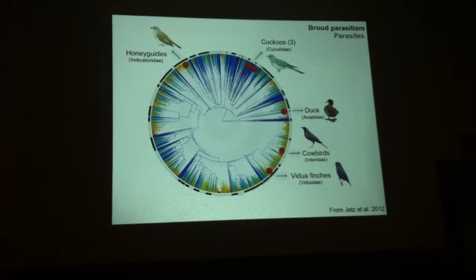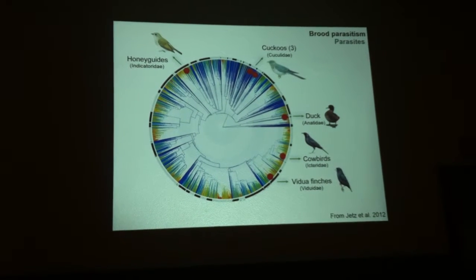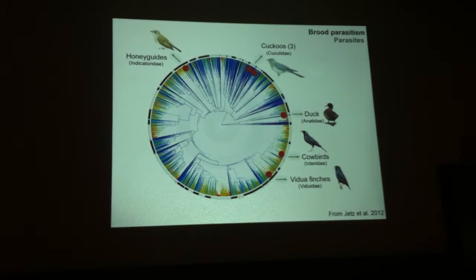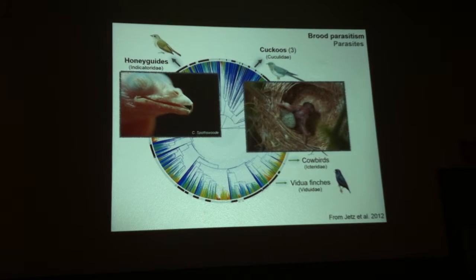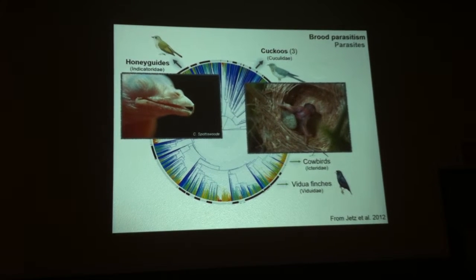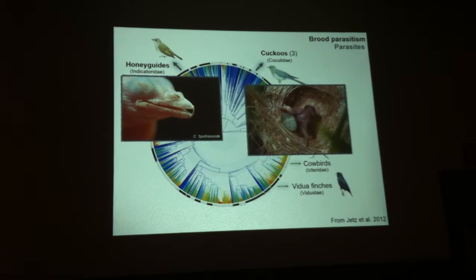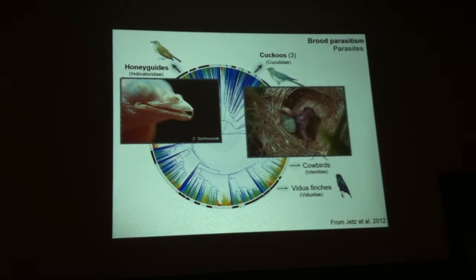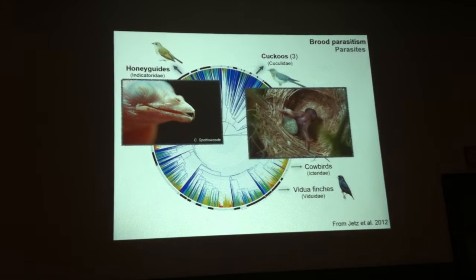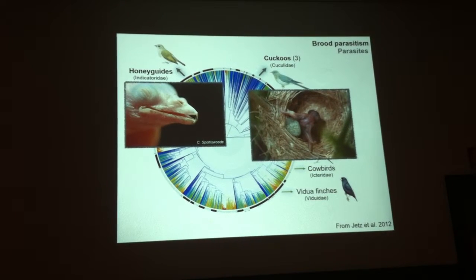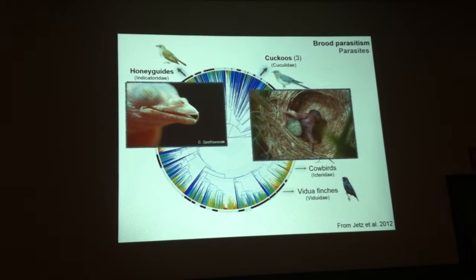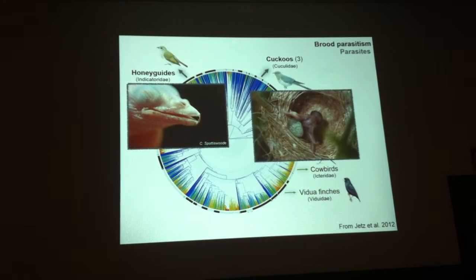Although all these lineages are considered to be bird parasites, there are differences in how virulent they can be. Honeyguides and cuckoos, for example, their chicks have adaptations to kill all the progeny of the host. Honeyguide chicks have hooks at the end of their bills that they use to stab the chicks inside the nest, while cuckoo chicks have flattened backs and they use these to balance the eggs of the host and evict them from the nest. So these two types of bird parasites are considered to be highly virulent.